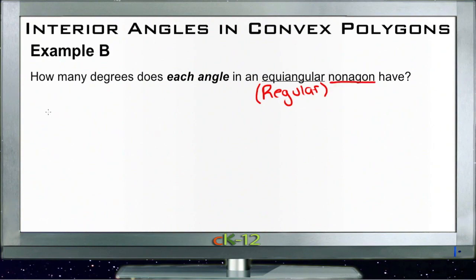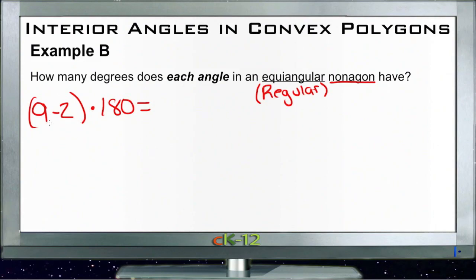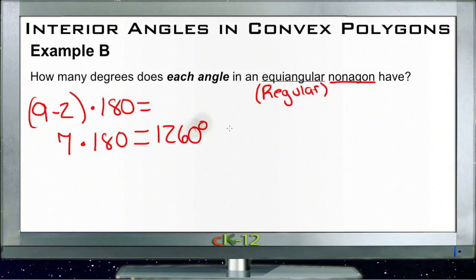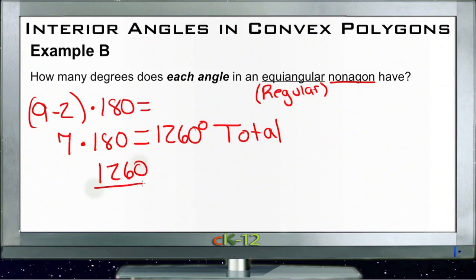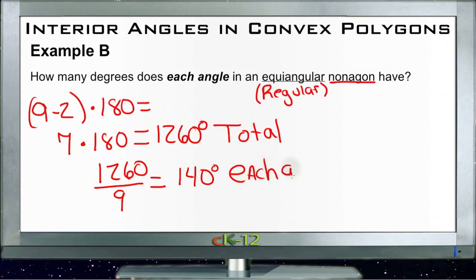So for a nonagon, which has nine sides, nine minus 2 times 180 gives us the total number of degrees. Nine minus 2 is 7, and 7 times 180 is 1260. So 1260 is the total number of degrees in the shape. Then since we have nine sides, we take 1260 and divide it by 9, and we get 140 degrees for each angle in the shape.